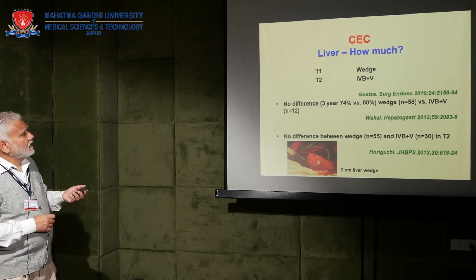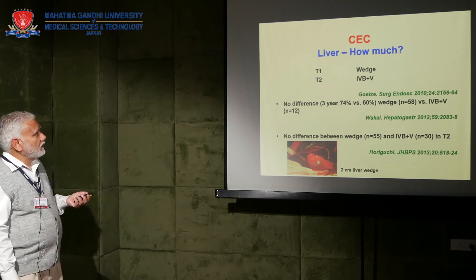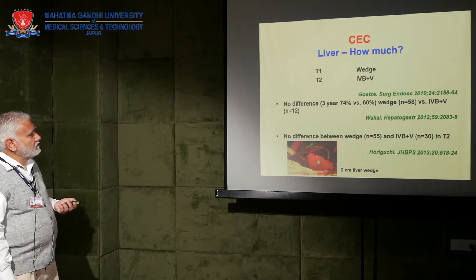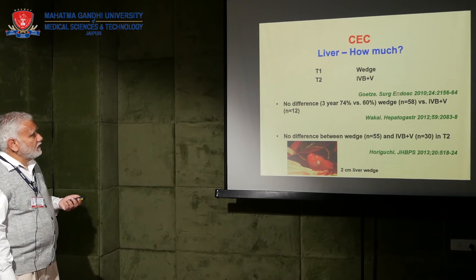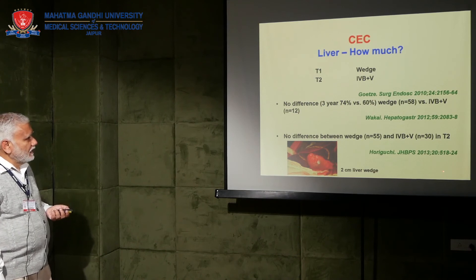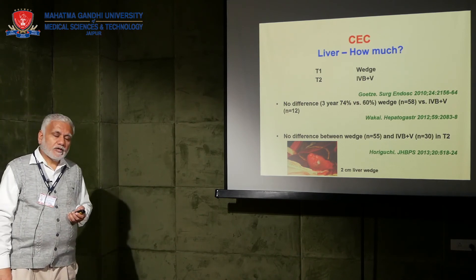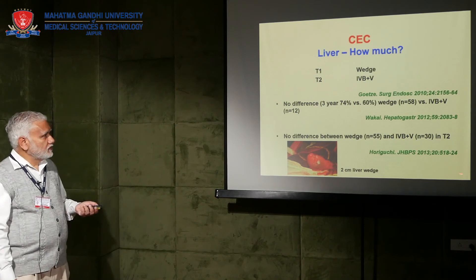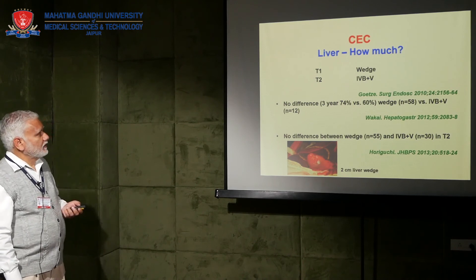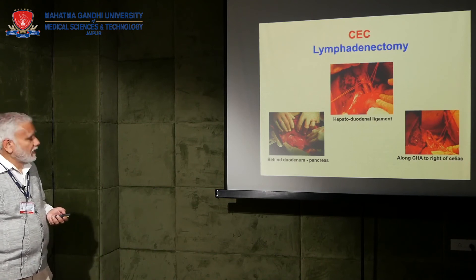Regarding how much of the liver to remove — wedge versus segment 4B and 5 — a report from Germany suggested wedge is sufficient for T1B but 4B and 5 is recommended for T2. However, a comparison from a Japanese consortium showed no difference in three-year survival between the two procedures, and another recent publication confirmed that as long as R0 resection can be achieved in T2 disease without liver infiltration, it makes no difference whether a liver wedge or 4B and 5 resection is done. The extent of lymphadenectomy is the same as in primary extended cholecystectomy — the entire hepatoduodenal ligament from the porta hepatis to the superior border of the first part of the duodenum, complete Kocherization of the duodenum and head of the pancreas, all retropancreatic and retroduodenal nodes, and nodes along the common hepatic artery to the right of the celiac axis.